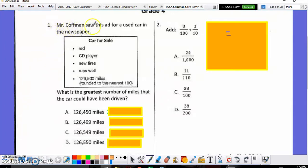For number one, we see that Mr. Kaufman saw this ad for a used car in a newspaper. And we know that 126,500 miles is rounded to the nearest hundred. It's the car for sale. Our main question though, our W, is what is the greatest number of miles that the car could have been driven? So what I would do when I have multiple choice questions that look like this, and I want to know what the greatest number of miles is when I'm rounding, is I'd round every single one to the nearest hundred.